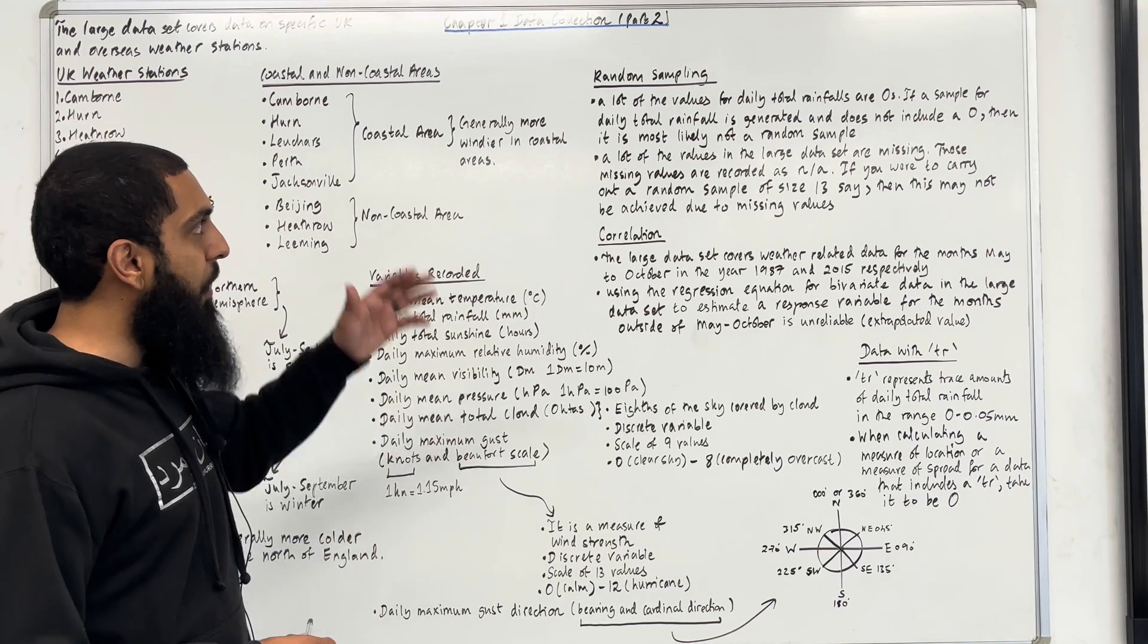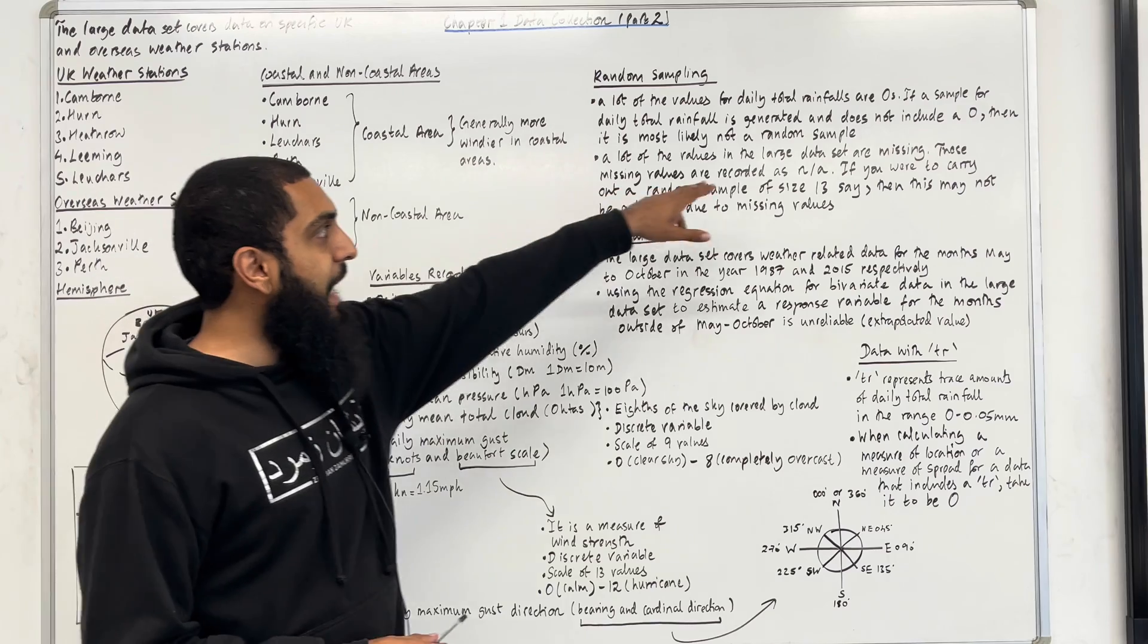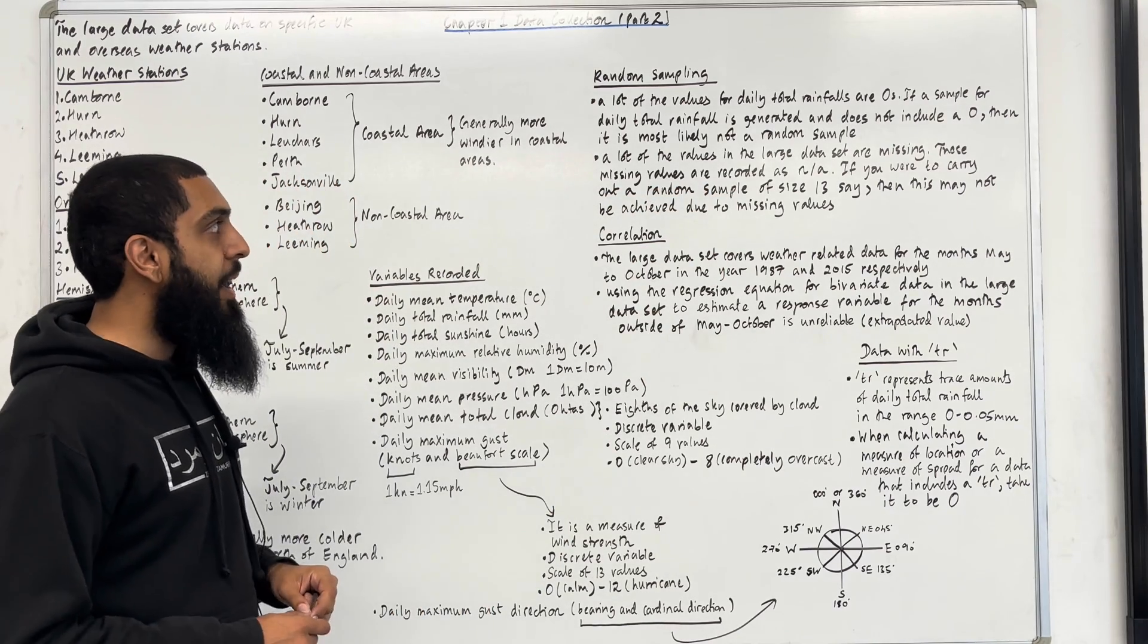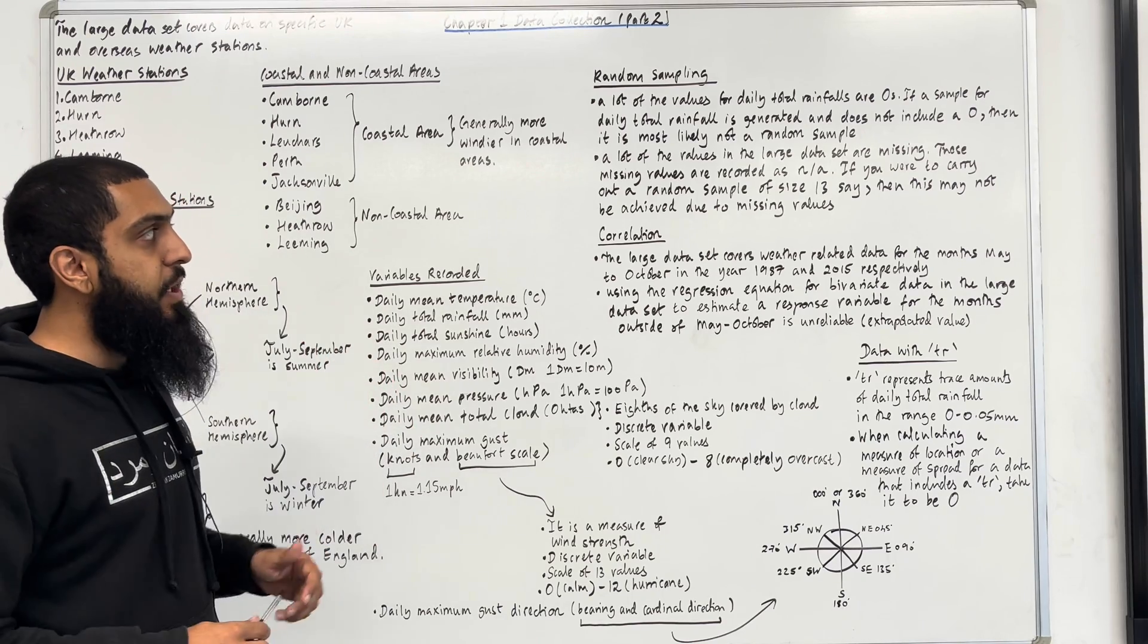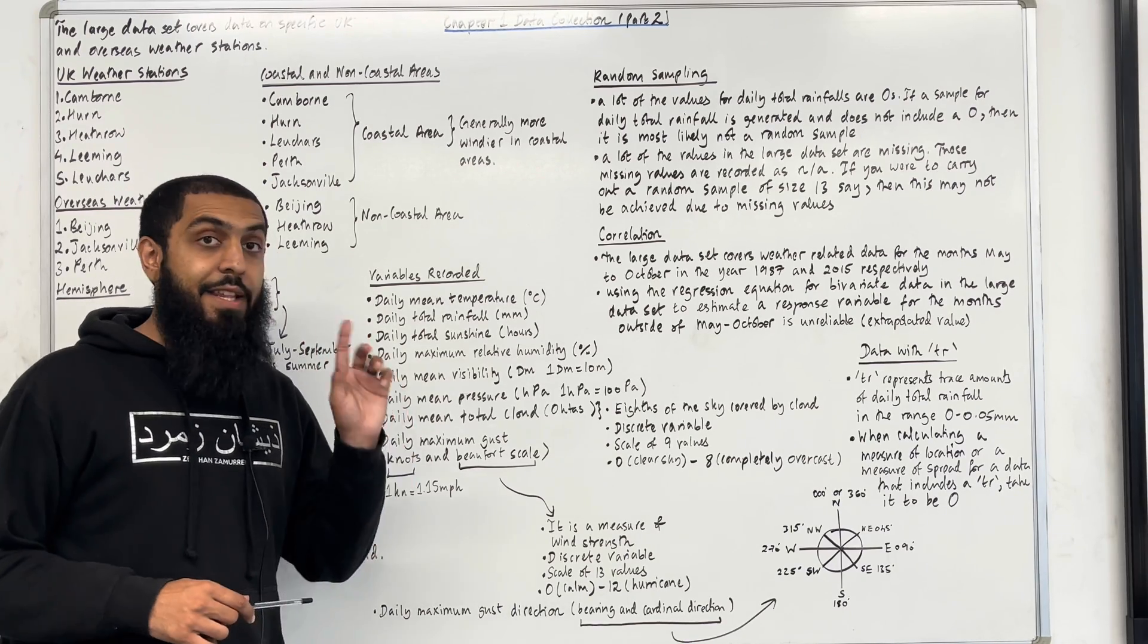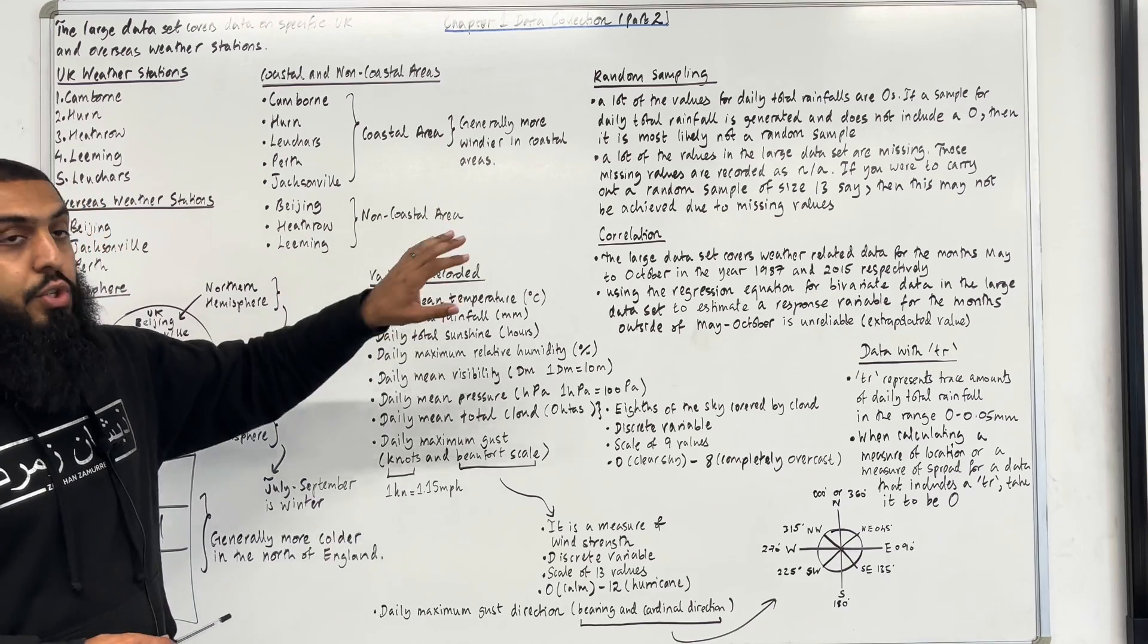Moving on to the next point about random sampling. A lot of the values in the large data set are missing. These missing values are recorded as N/A. If you were to carry out a random sample of size 13, this may not be possible due to missing values.